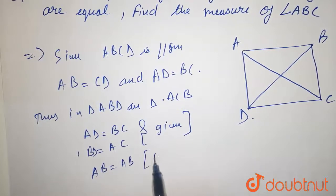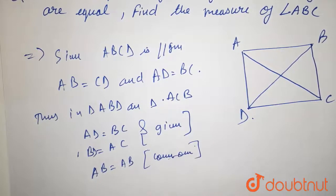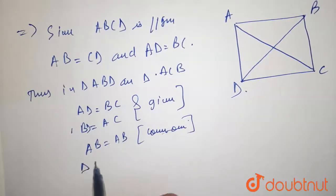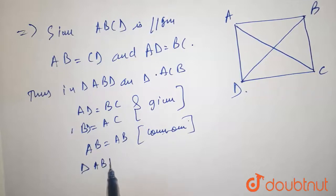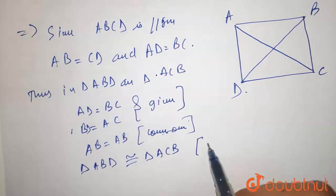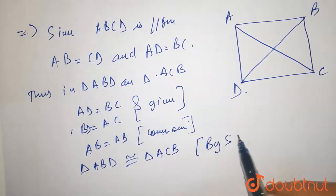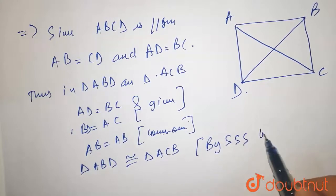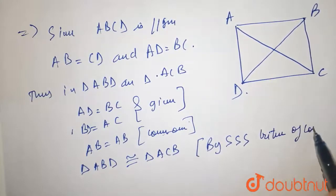which is common. So triangle ABD is congruent to triangle ACB by side-side-side criteria of congruency.